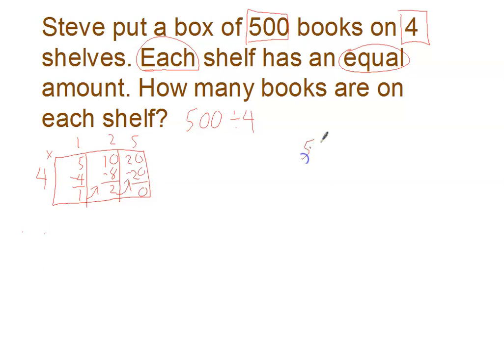I can also do partial quotients. So it looks like this. 500 divided by four. So basically we're going to see how many groups of four we can get out of five hundred. And right away I can see I can do a hundred. A hundred times four is four hundred. And I'm down to a hundred.